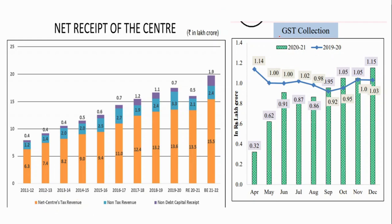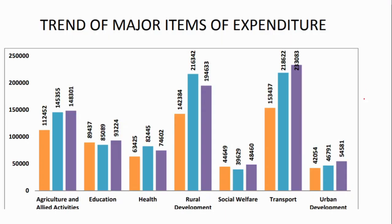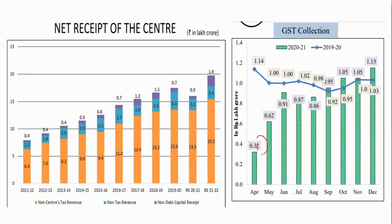GST is an important tax, so let's look at GST collections. This year's collections show that from October, November, and December it has crossed 1 lakh crore, which is a positive sign. However, in the previous year overall, there was a fall in GST collections. Since the lockdown happened, you can clearly see the lockdown's impact on GST collections in those months.